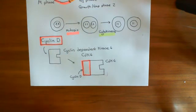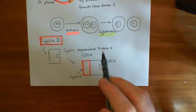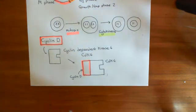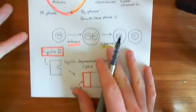So what does CDK4 do once it's actually activated? Well, it's a kinase enzyme, so it's going to phosphorylate groups on the side of proteins. The protein that the cyclin D-CDK4 complex is going to phosphorylate is the retinoblastoma protein. To understand the importance of this, we need to understand what the retinoblastoma protein is actually doing.